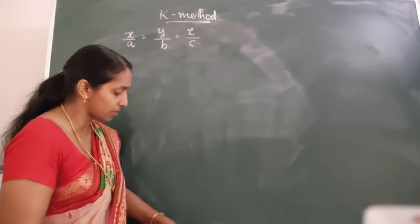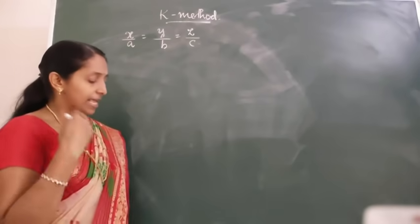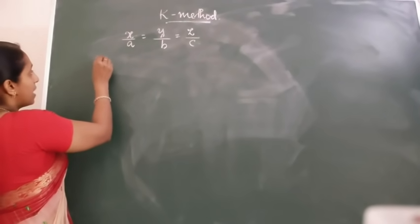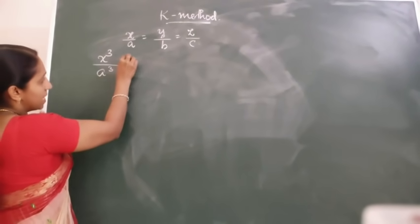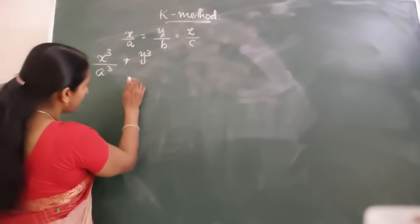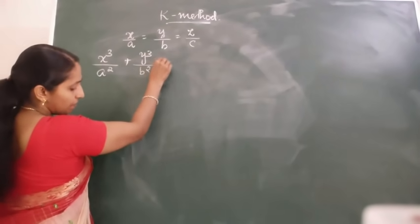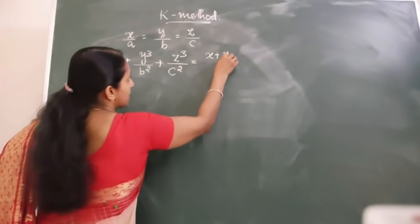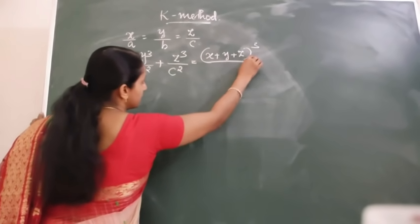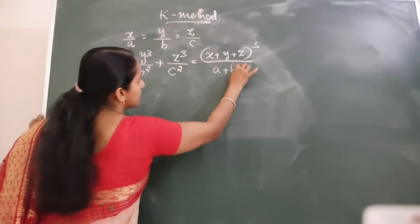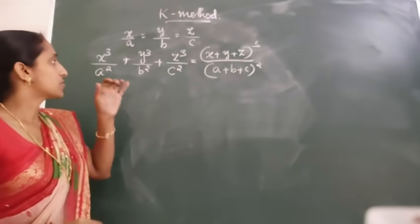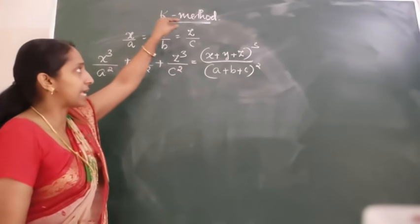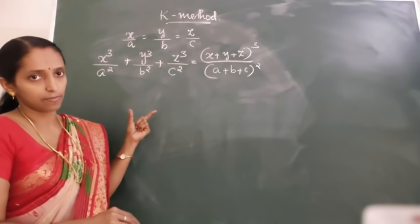If you have the textbook, you can go through from question number 16 onwards. You can see X upon A equal to Y upon B equal to Z upon C, then prove that. That means you are having a pair of ratios which are in proportion given. By using the K method, we are going to solve these questions.